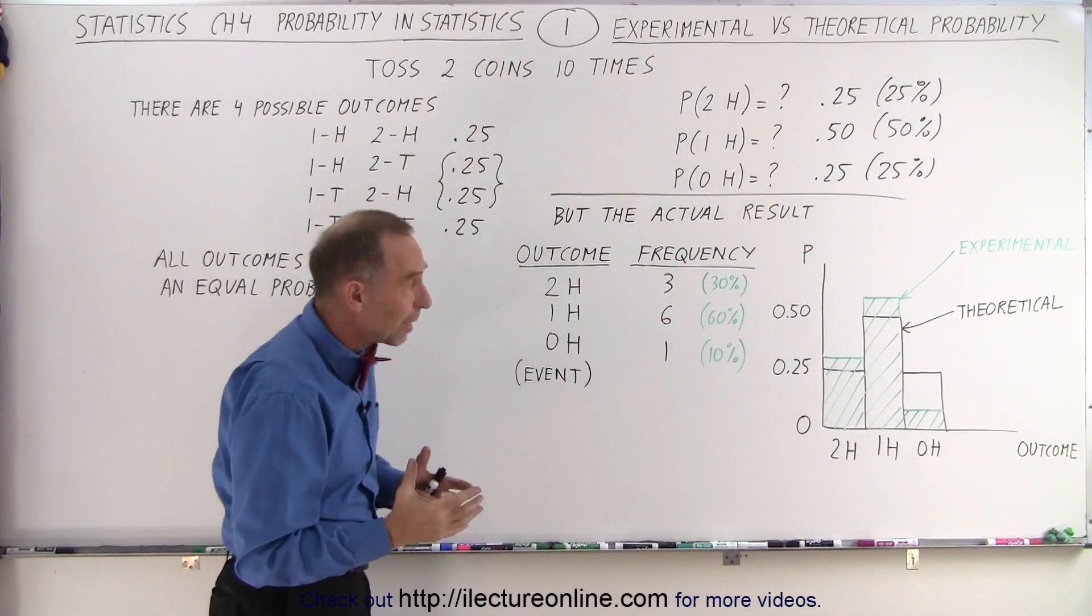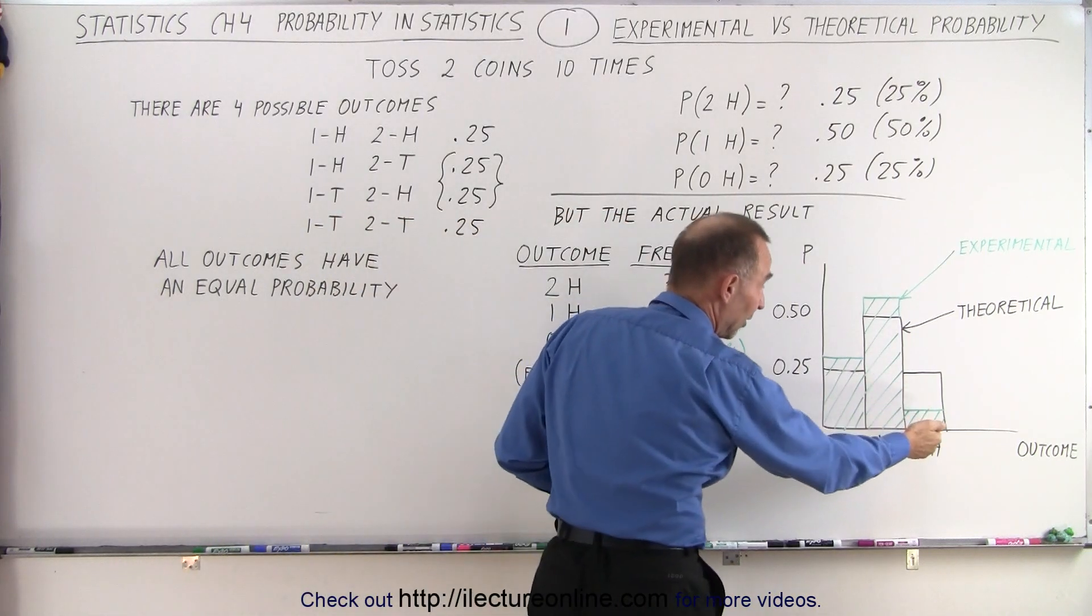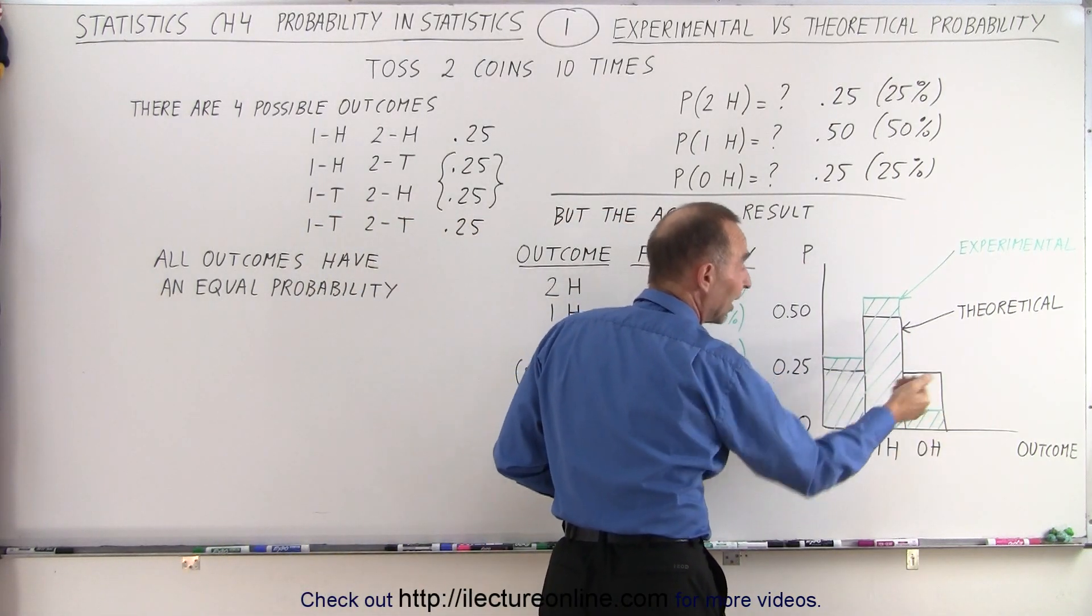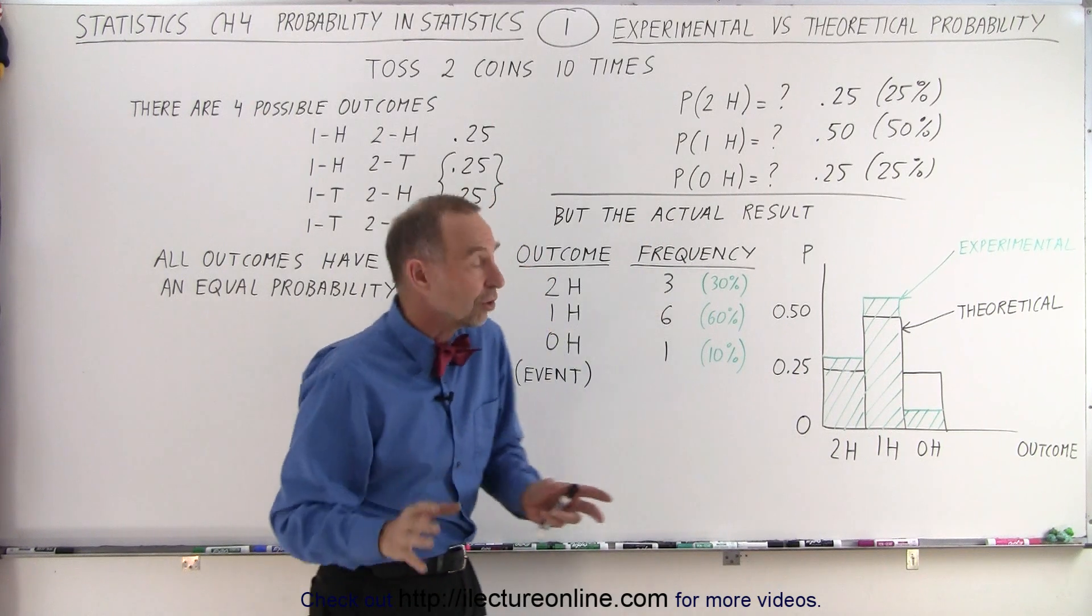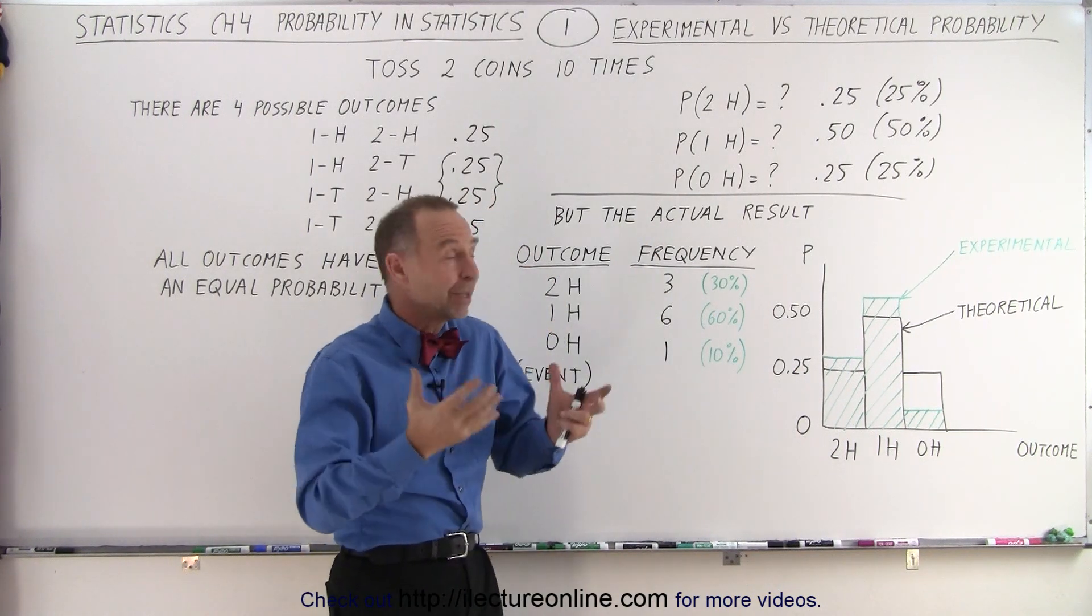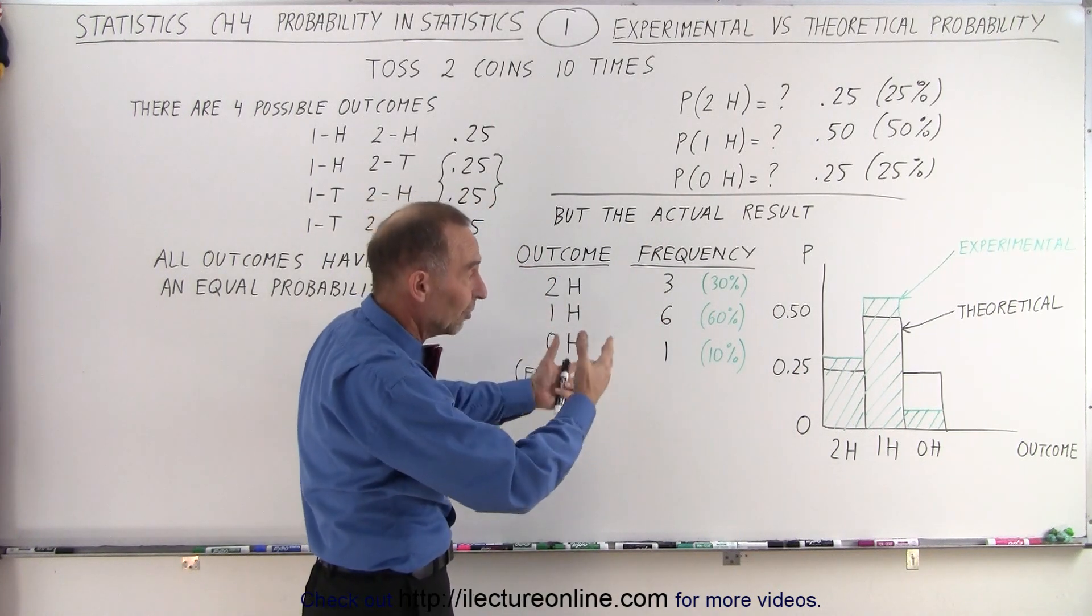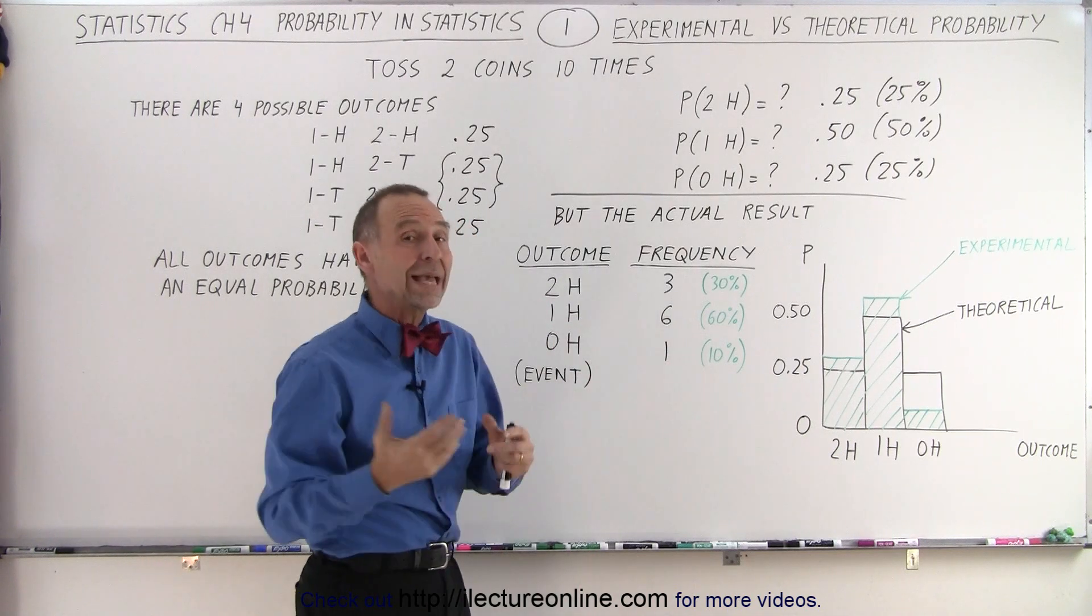Hmm, that is kind of a problem, especially this one right here, where we're expecting 25%, and we only got 10%. It almost looks like the probability, at least the theoretical probabilities, were nowhere close to what we actually got.